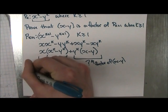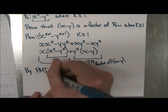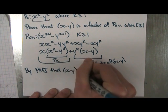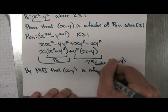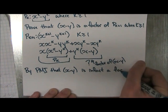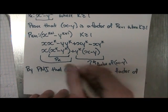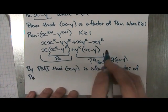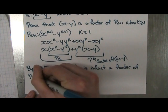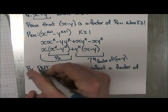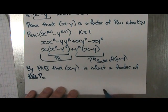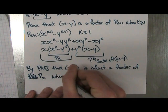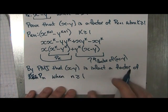So, now we conclude, we can conclude by PMI, or the principle of mathematical induction, that x minus y is, in fact, a factor of P_n, because that's what you're trying to prove initially. It's P_n when n is greater or equal to 1. And that's it.